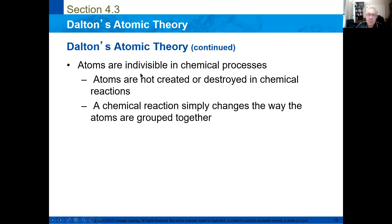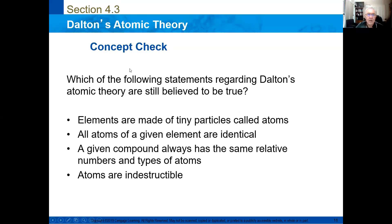Atoms are not possible to be divided. You cannot divide an atom by chemical process. Atoms are not created or destroyed in a chemical reaction. In a chemical reaction simply changes the way the atoms are joined together. Here you have a question. Which of the following statements regarding Dalton's atomic theory are still believed to be true? Elements are made of tiny particles called atoms. All atoms of a given element are identical. A given compound always have the same relative number of types of atoms. Or atoms are indestructible. Well, the answer is these two.